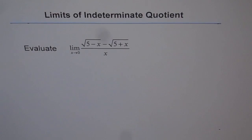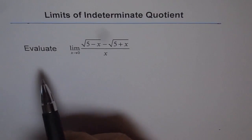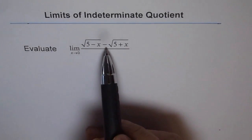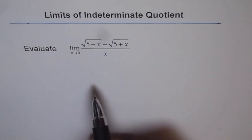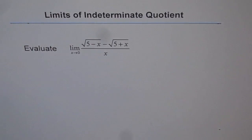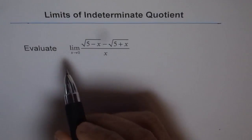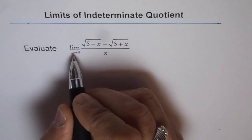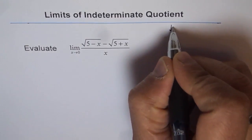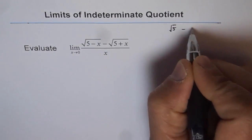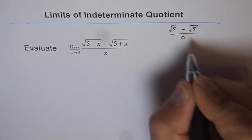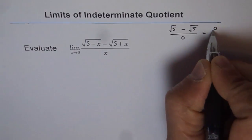Limits of indeterminate quotient. Evaluate the limit of square root of 5 minus x minus square root of 5 plus x, divided by x, where x approaches 0. Let's substitute x equals 0 and see what we get. We get square root of 5 minus square root of 5 in the numerator, and x equals 0 gives us 0 in the denominator. So we get 0 over 0.